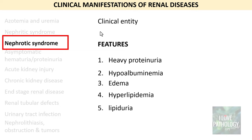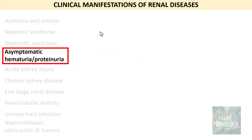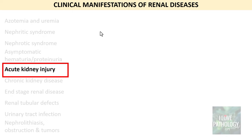The next manifestation is asymptomatic hematuria or proteinuria — as the name says, these are not symptomatic. On a routine urine examination you find RBCs and even protein in urine, and that is probably because of mild glomerular diseases.